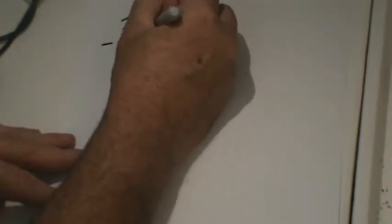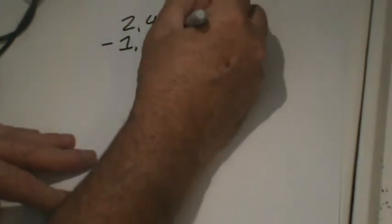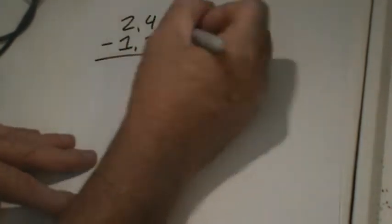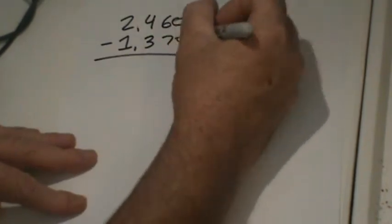It's 2,460 minus 1,370. Zero minus zero is zero.